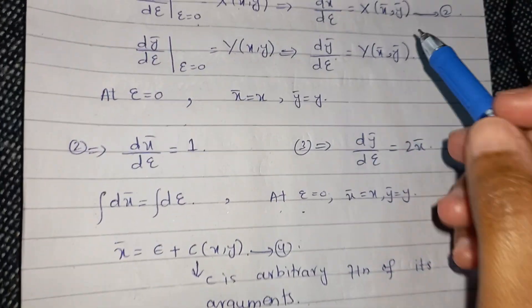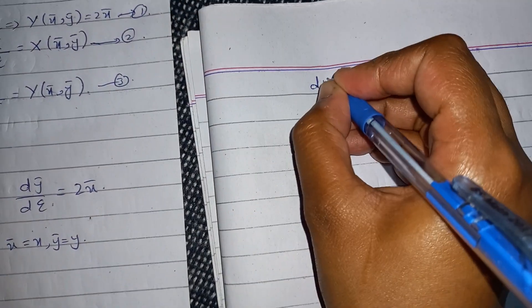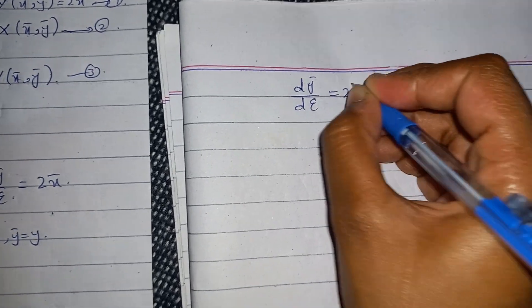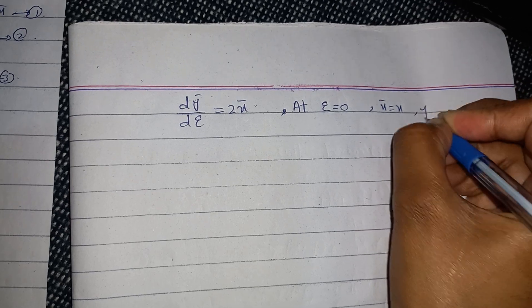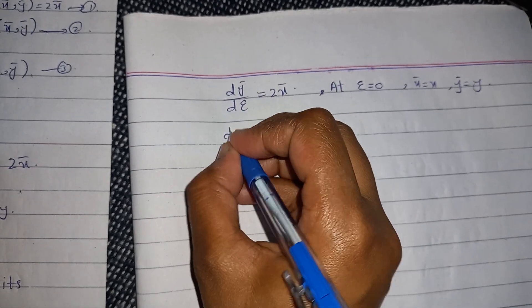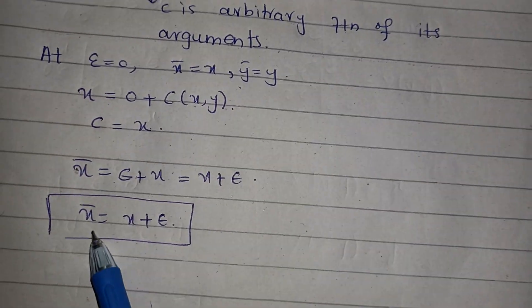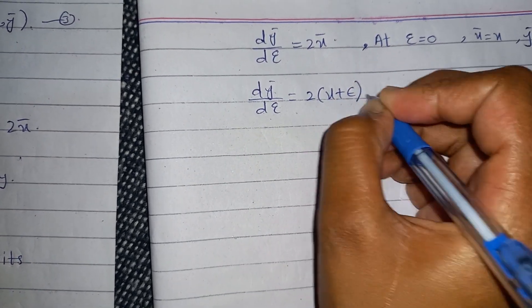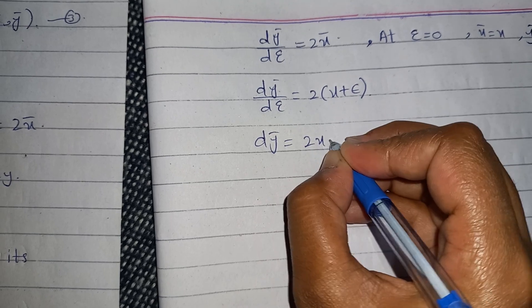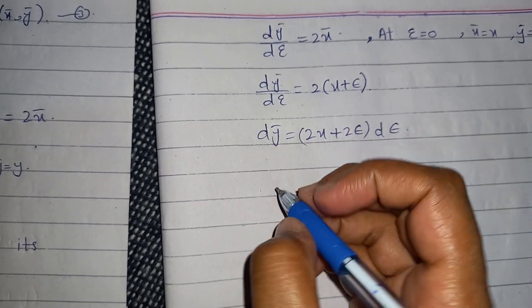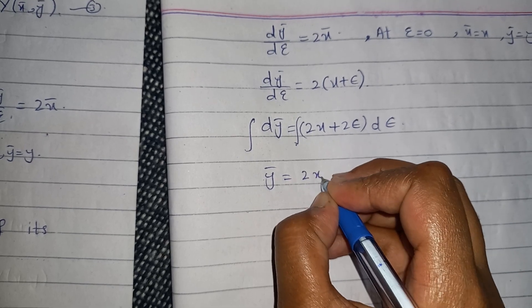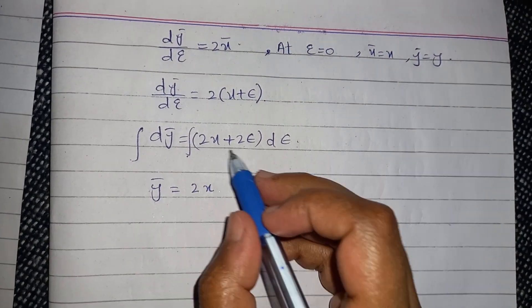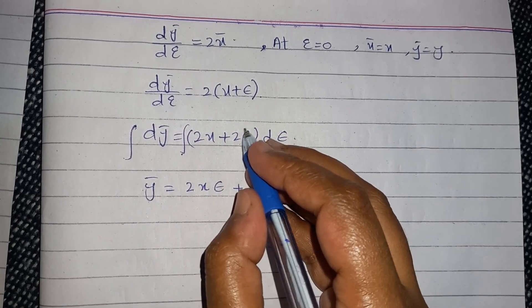Now we find the value of ȳ. We have dȳ/dε = 2x̄ with initial condition at ε = 0: x̄ = x and ȳ = y. Substituting the value of x̄ = x + ε, we get dȳ/dε = 2(x + ε), so dȳ = (2x + 2ε)dε. Integrating both sides gives ȳ = 2xε + ε² + c(x,y), applying the power rule.